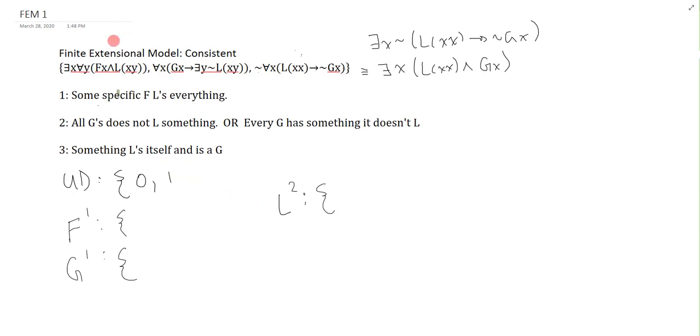Now where do we start? The easiest places to start are wherever we invoke some sort of existential. These are the easiest places to start because they tell you something clear and concrete. Some specific F L's everything. Okay well what do you want this specific F to be? It doesn't matter. It just needs to be in the universe of discourse. It could be 0, it could be 1, if you wanted to add 2, it could be 2. I'm just arbitrarily gonna make it 0. I'm gonna pick a put a little note up here so I remember that my specific F is actually the 0.